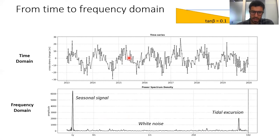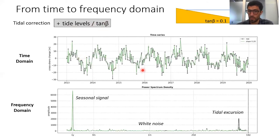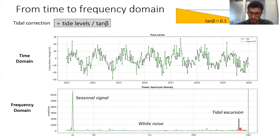The idea of this technique is to test different slopes, use those slopes for tidal correction, and see what happens in the frequency domain. If we don't know the slope at a site, we try different values — for example 0.2. Applying a tidal correction means adding the tidal levels divided by the beach slope. After applying the correction with slope 0.2, the seasonal signal stays the same but this tidal excursion peak is reduced because we've removed some of the tidal signal from the shoreline time series.